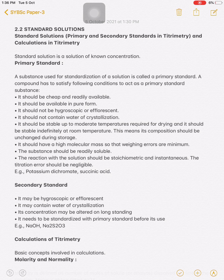To summarize: a primary standard should be easily available in pure form, should not be hygroscopic, should not contain water of crystallization, should be stable at room temperature, and should have a high molecular mass. Examples are potassium dichromate and succinic acid.